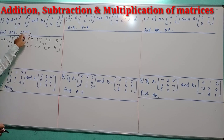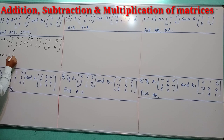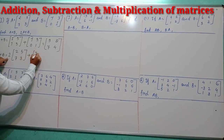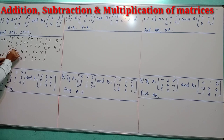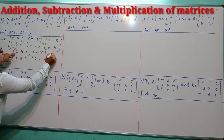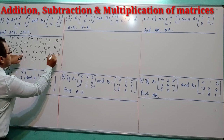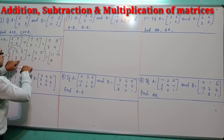Now moving to 2A plus B. This means matrix A is to be multiplied by 2 and then added to B. So 2 times [2, 7; 5, 3] plus [7, 0; 3, 1]. We get: 2×2=4, 4+7=11; 2×5=10, 10+3=13; 2×7=14, 14+0=14; 2×3=6, 6+1=7. So 2A plus B equals [11, 14; 13, 7].